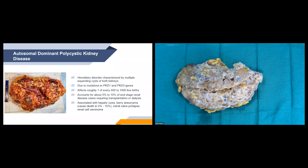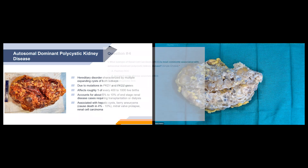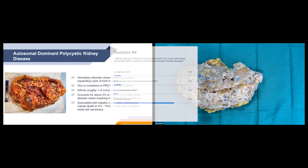What subtype of RCC is most commonly associated with autosomal dominant polycystic kidney disease? The correct answer is clear cell RCC, which is also the most common subtype in the general population as well.